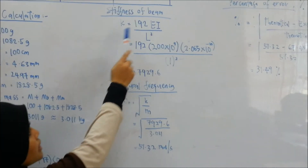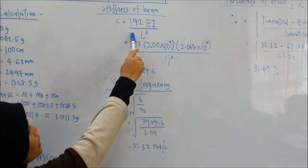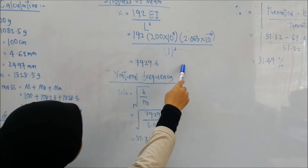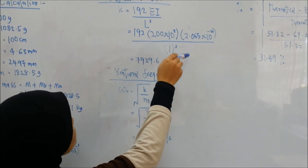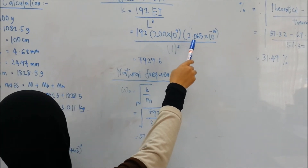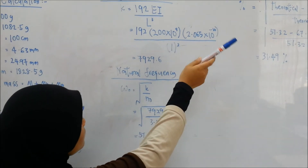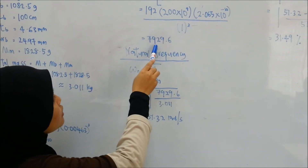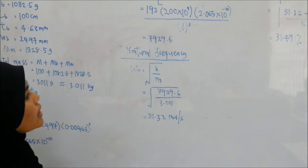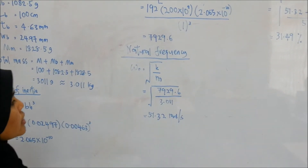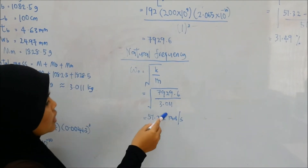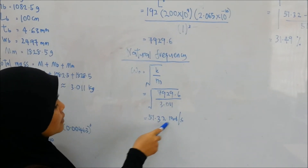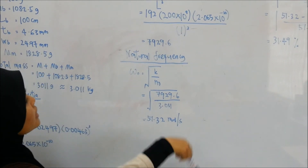Next, we calculate stiffness k using the formula k = 192EI / L³. The value of E is 200 × 10⁹, and moment of inertia is 2.065 × 10⁻¹⁰ over L³, giving k = 78929.6. Next, we calculate natural frequency ω₀ = √(k/m). With k = 78929.6 and m = 3.011kg, we get ω₀ = 51.32 rad/s. This is the theoretical value.